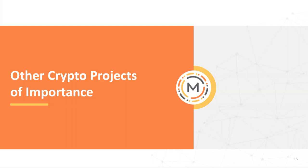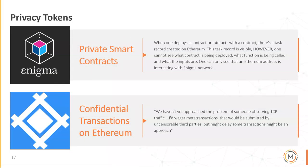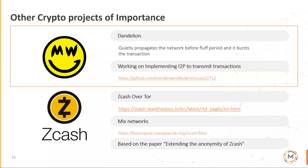I also wanted to talk about other crypto projects of importance. First, Grin implements Dandelion. High level, Dandelion aims to achieve that during the stem phase it quietly propagates the network — it goes to a certain set of nodes, then once it reaches enough nodes it reaches the fluff phase, where it bursts out the transaction across the network. With a global passive adversary this can still be de-anonymized, since the network is being completely surveilled. Grin is also working on implementing I2P over transactions.